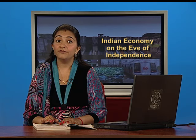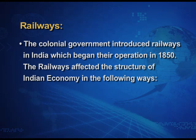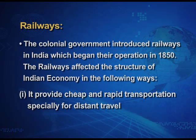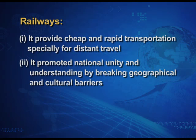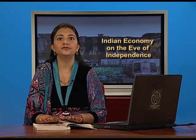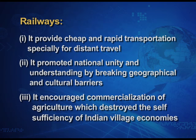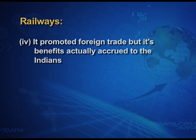The colonial government introduced railways in India, which began operations in the year 1850. Railways affected the structure of the Indian economy in various ways. Firstly, they provided cheap and rapid transportation, especially for distant travel. They also promoted national unity and understanding by breaking geographical and cultural barriers, which was beneficial for Indians. Third, railways encouraged commercialization of agriculture, which destroyed the self-sufficiency of Indian village economies, and also promoted foreign trade.